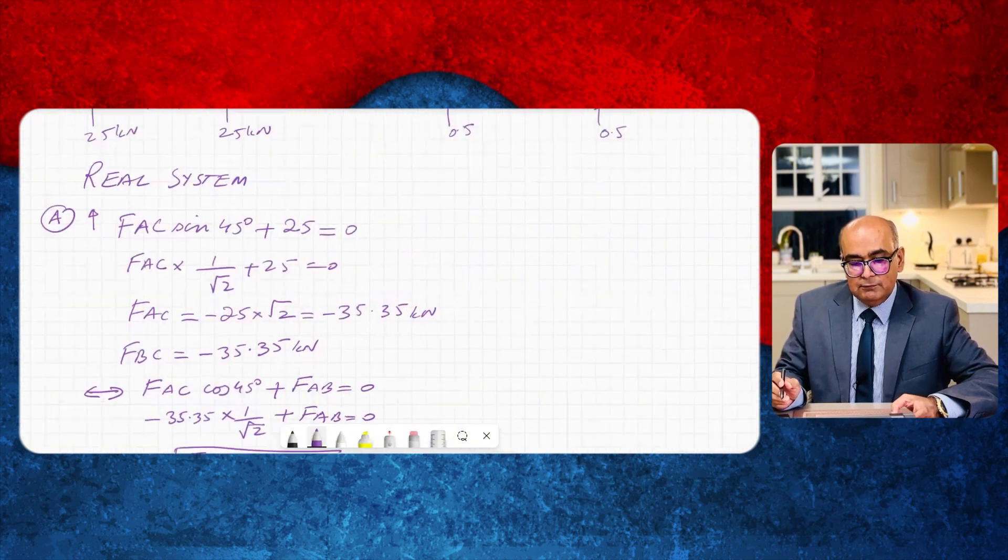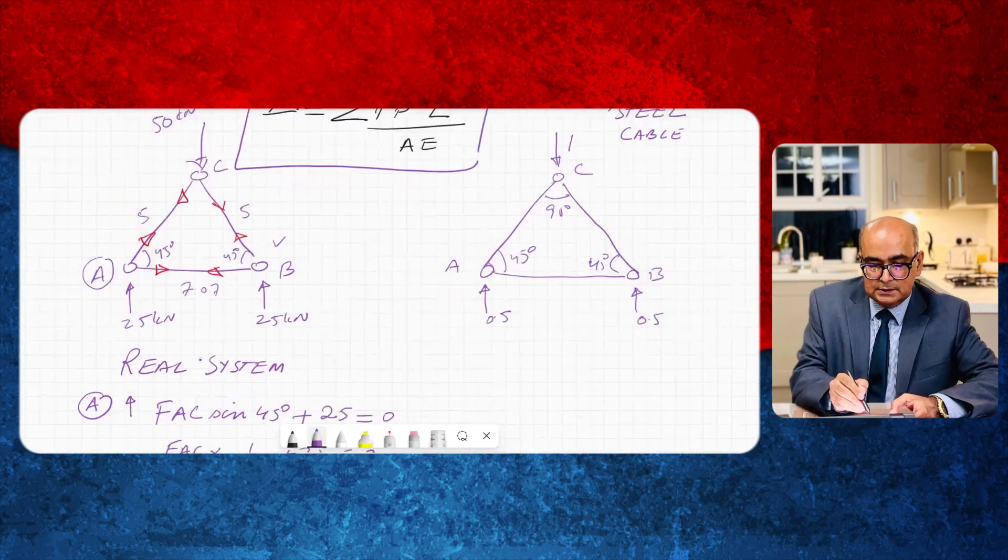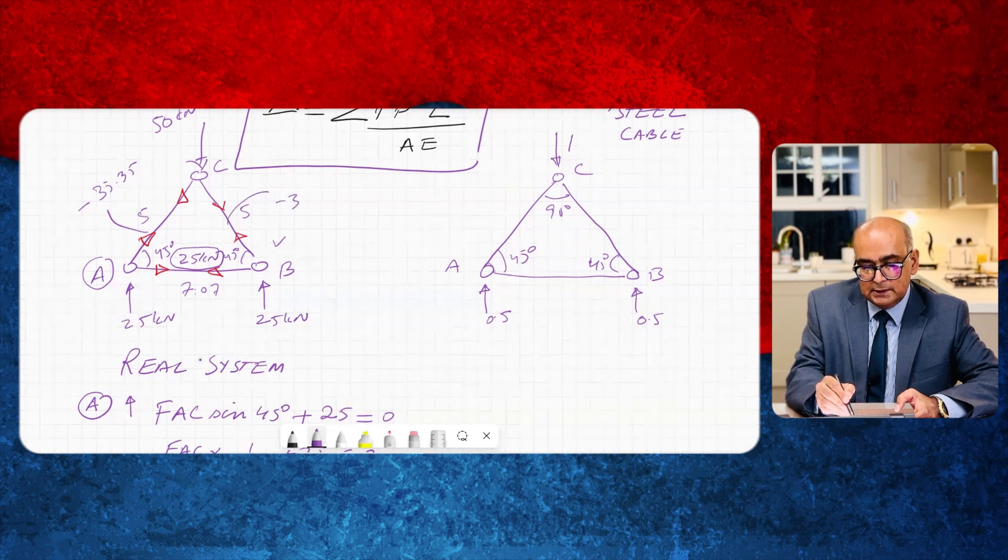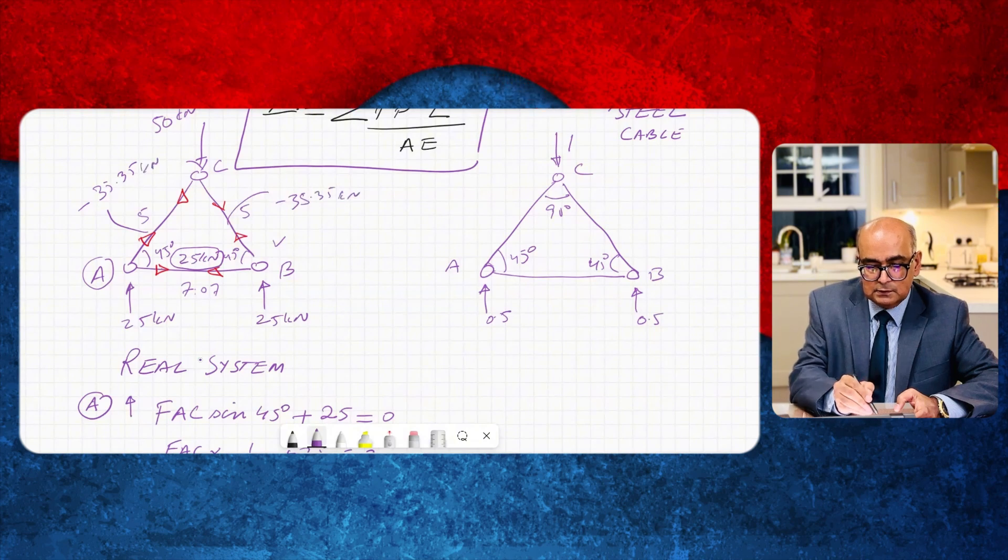So I will say FAB is equal to plus 25 kilonewton. So now I have got forces in all the members. This is 25 kilonewton and here I have 35.35 but negative. Negative indicates that it is compression minus 35.35 kilonewton.